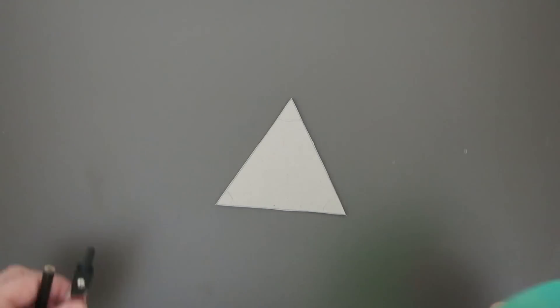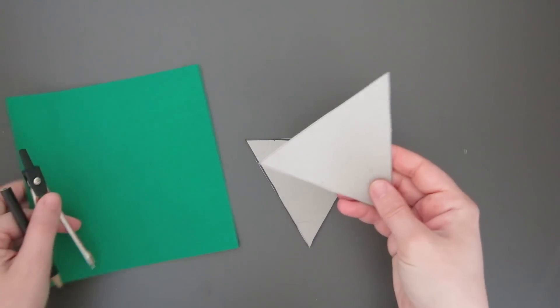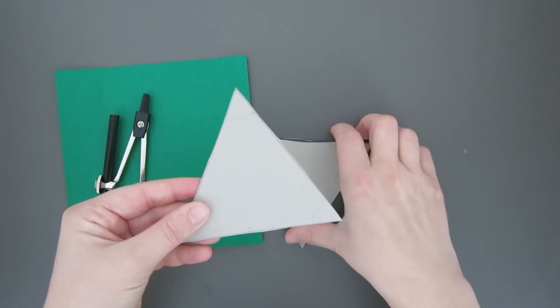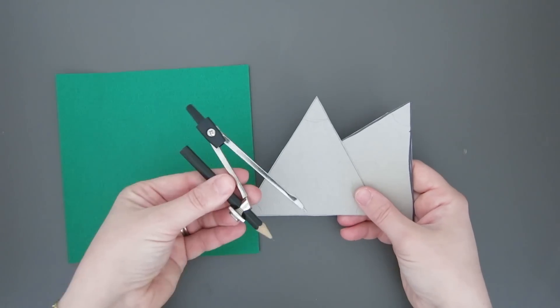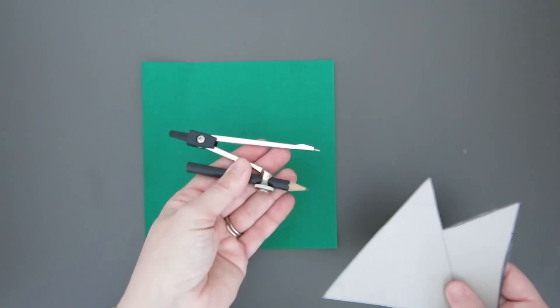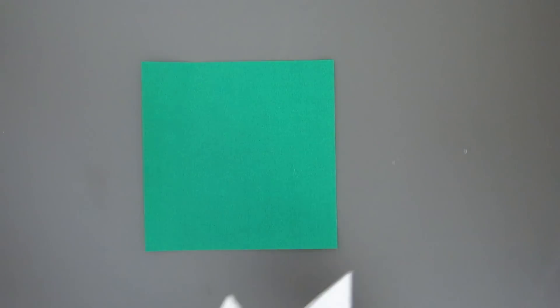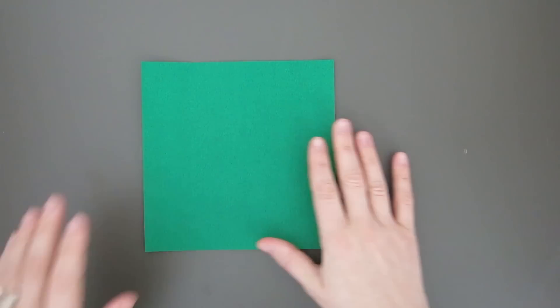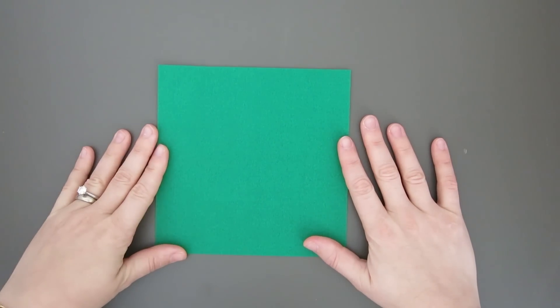Hi guys, welcome back to Origami Twist. In anticipation of my triangular box series, I am giving you some instructions on how to create a triangle template. Now in the last video I made a triangle template using a compass. Today's video is for those of you that do not have a compass and have no intention of getting a compass.